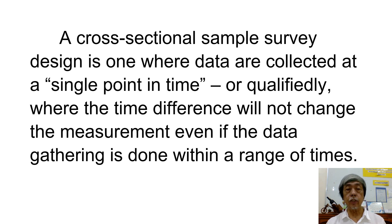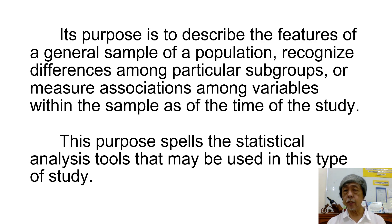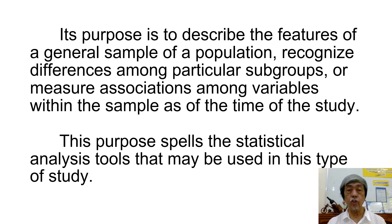A cross-sectional sample survey design is one where data are collected at a single point in time, or qualifiedly where the time difference will not change the measurement even if the data gathering is done within a range of times. Its purpose is to describe the features of a general sample of a population, recognize differences among particular subgroups, or measure associations among variables within the sample as of the time of the study.